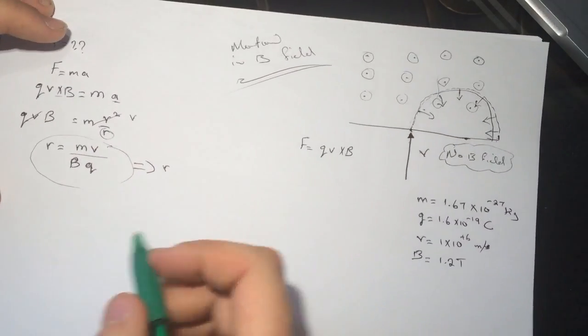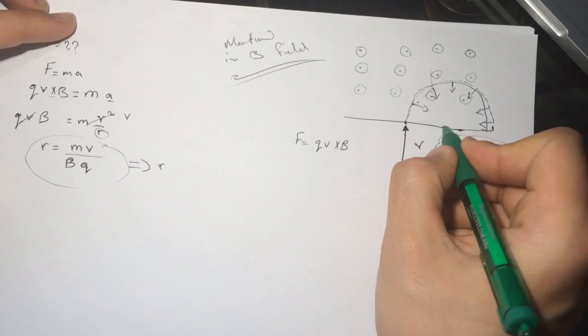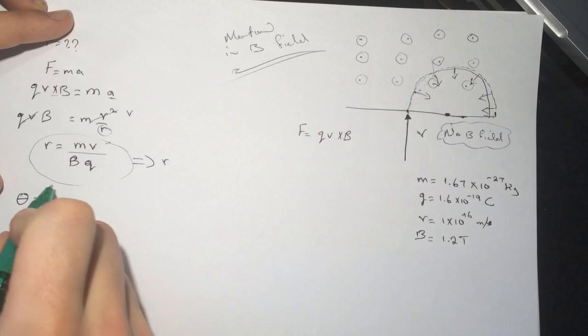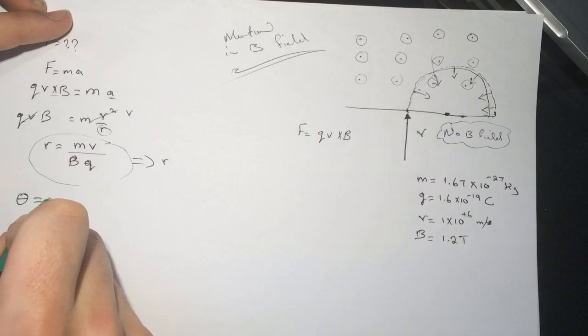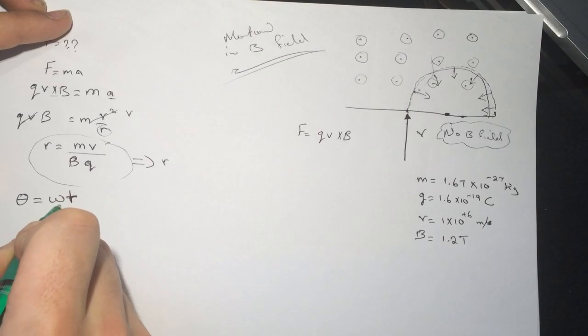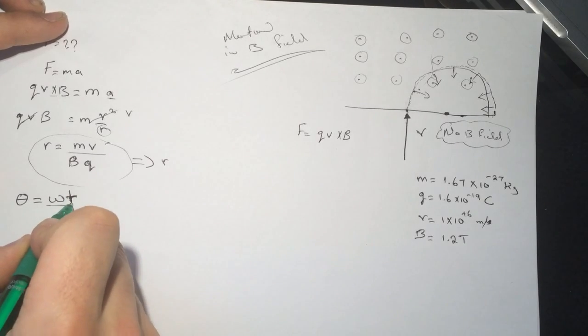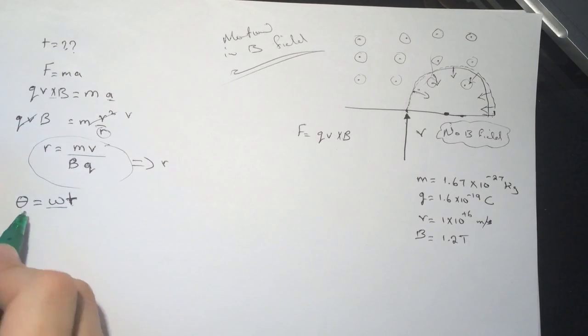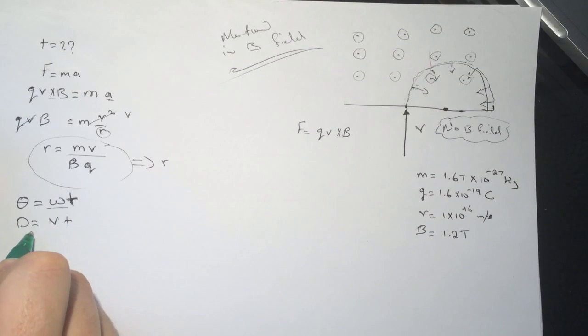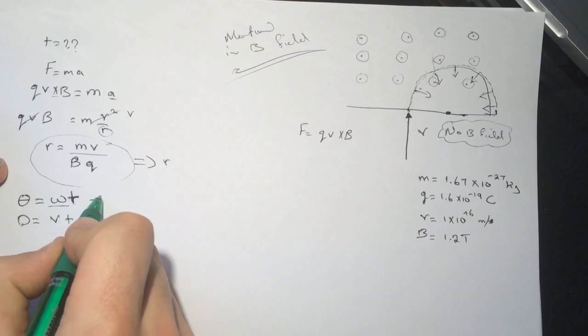Now the theta, like the angular displacement, is equal to omega t. It's like the angular velocity times the time, so it's kind of the same as D equal V T. So omega here is the same as V over R times T.